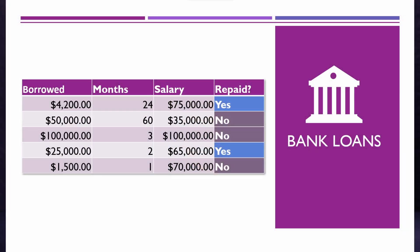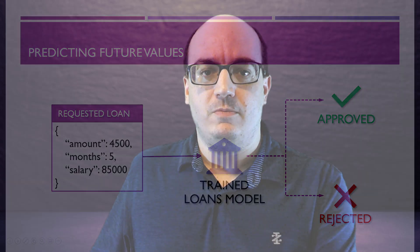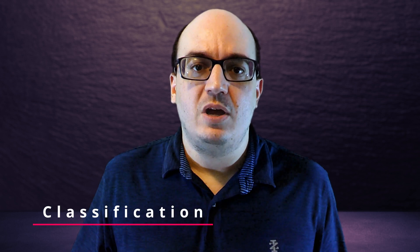Let's imagine that you were a bank and you had some historical information available to you about people who had taken out loans from your bank, as well as whether or not those loans were eventually repaid. Using this dataset, you could train a machine learning model to predict whether or not a future person is likely to repay the loan that they are requesting from you. This is an example of a classification problem.